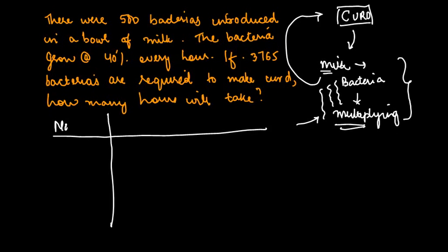You are told that the number of bacteria added to the curd are 500 at the start of the process. When the time increases from 0 to 1 hour, these bacteria reproduce at the rate of 40 percent every hour.